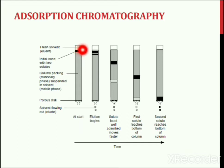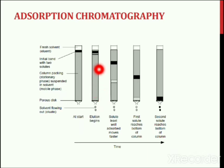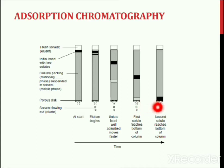Step 2: the solvent or a suitable solvent mixture is added by touching the side of the glass column. Step 3: when the tap of the column is open, the components in the compound mixture move along with the eluent depending on the polarity of the sample molecules and are thus separated. The different components are then collected at different time intervals.